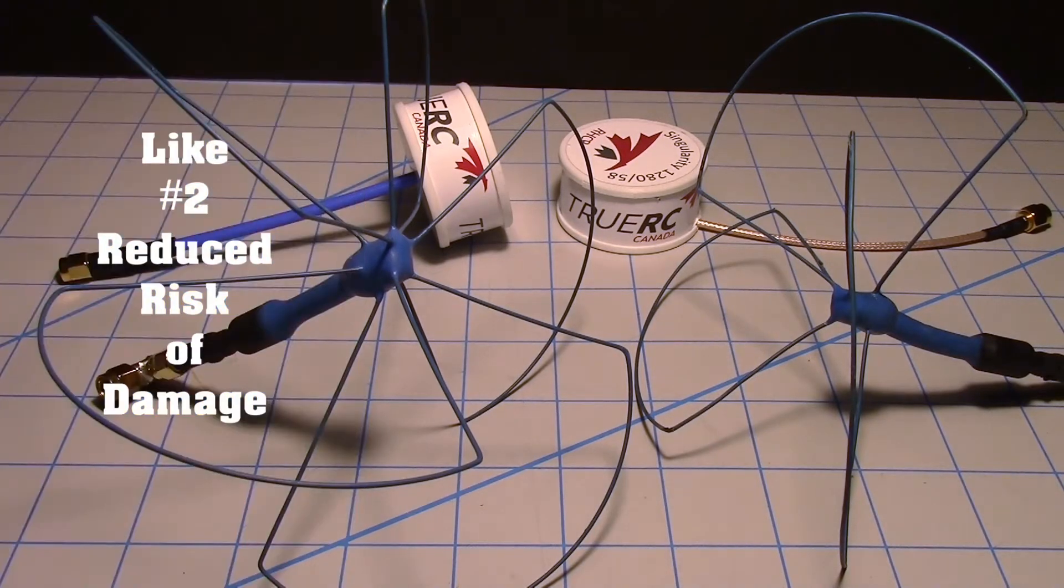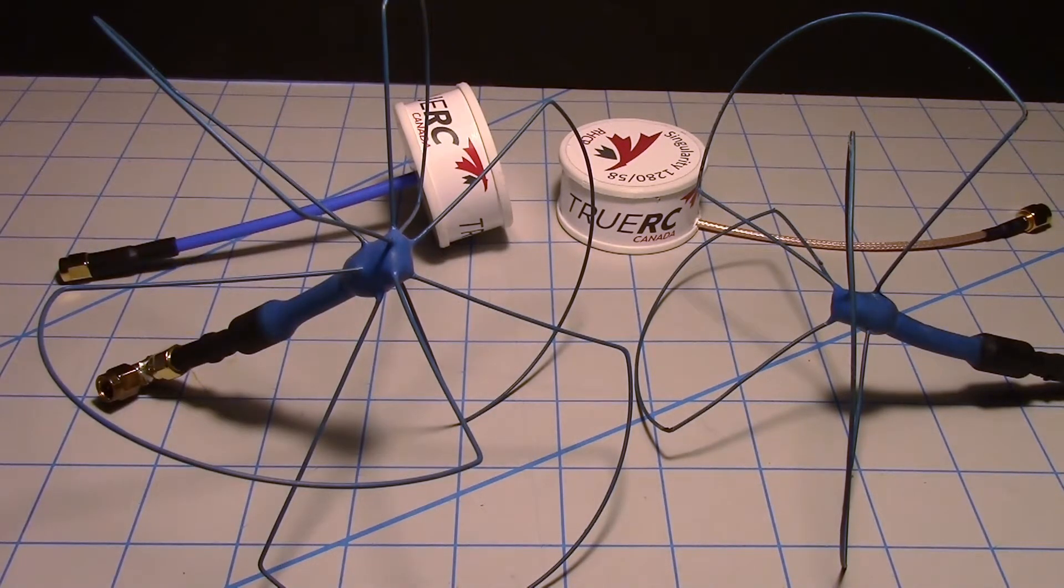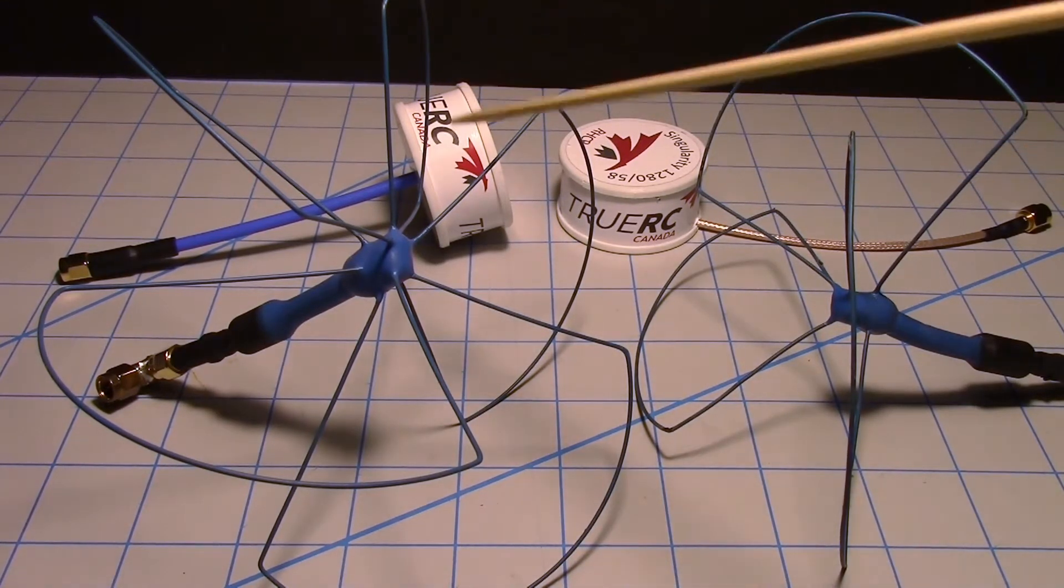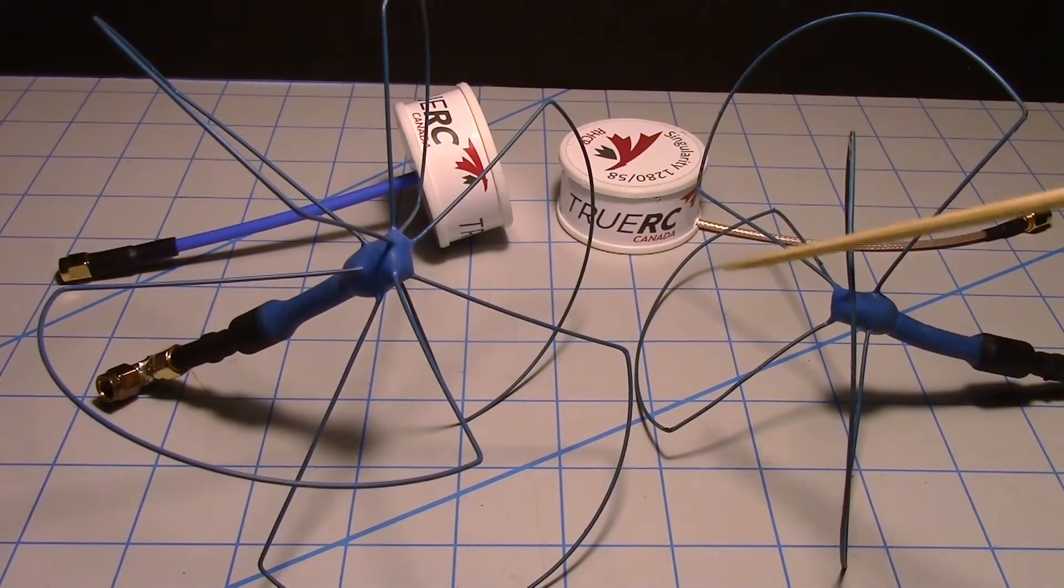Now the compact size leads me to my next point which is they're less likely to get damaged either on the aircraft or if they're on your goggles where they might get bumped into.